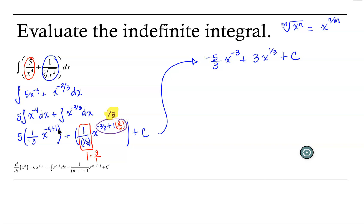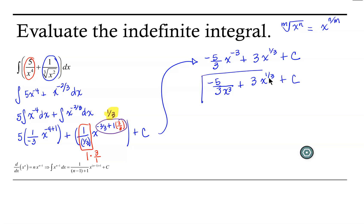Lastly, let's go ahead and rewrite this without a negative exponent. So we will have negative 5/3 times x cubed in the denominator, plus 3 times x to the 1/3. We can leave this power as a fraction — we don't need to write it as a radical — plus c. And this would be our antiderivative.